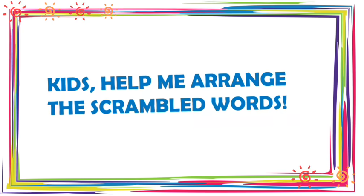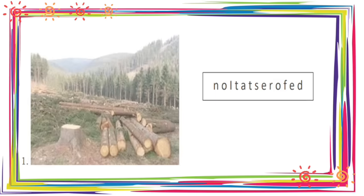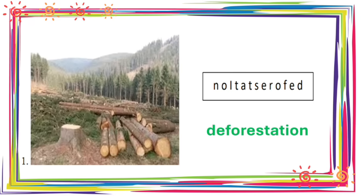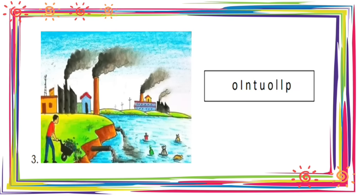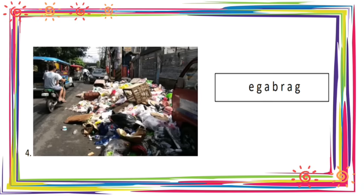Kids, help me arrange the scrambled words. The first answer is deforestation. The second answer is food waste. The third answer is pollution. The fourth answer is garbage. Good job!